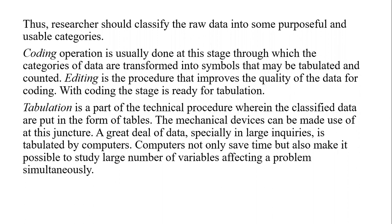Researchers should classify the raw data into purposeful and usable categories. The coding operation is usually done at this stage through which categories of data are transferred into symbols that may be tabulated and counted. Tabulation is all about setting up your data in tabulated form. Editing is the procedure that improves the quality of the data for coding purposes. Once coding is done, tabulation is the technical procedure wherein classified data are put into the form of tables.